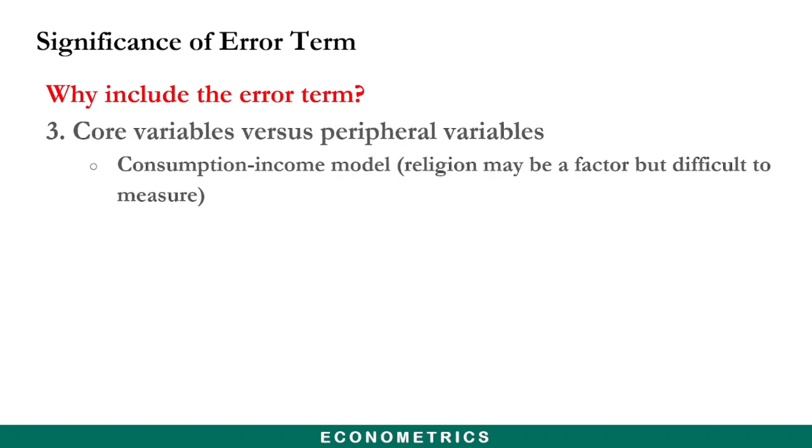However, there are other variables that can also affect consumption which we normally don't include in the consumption function. Some of these variables include education, size of the household, religion, and several others. But information on, let's say, religion may not be available or perhaps it is rather difficult to measure, so we omit it from the model. That is why we include the error term to represent all those variables that we normally exclude.